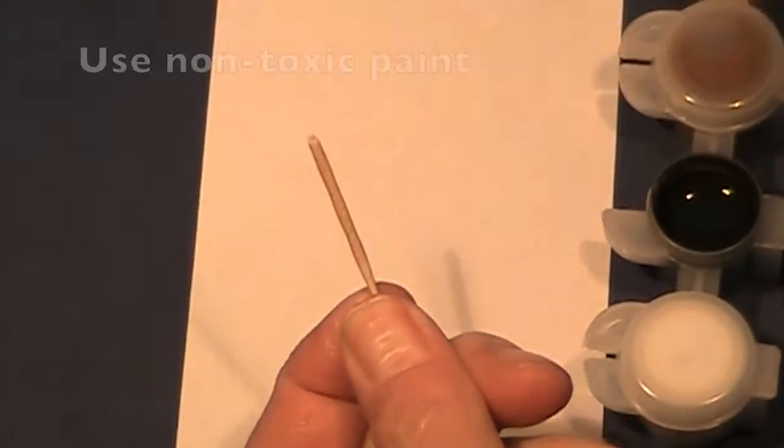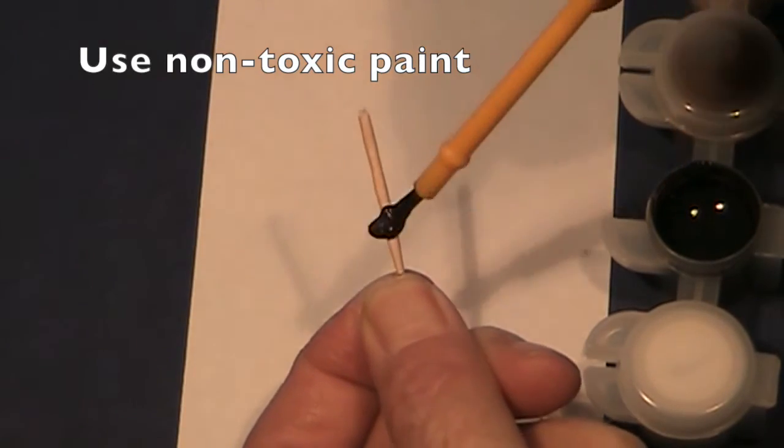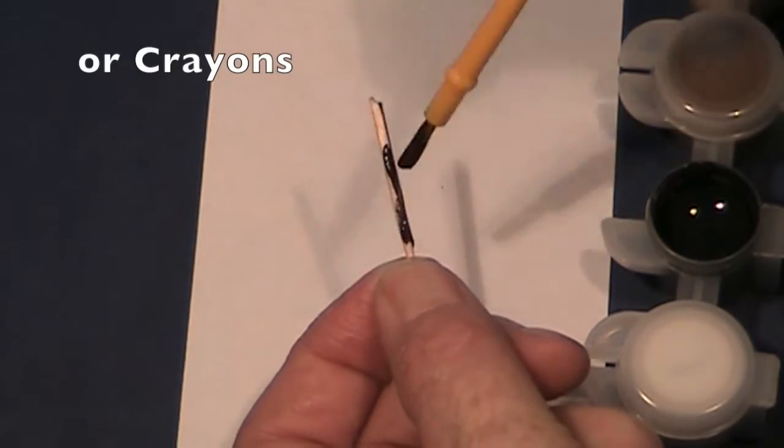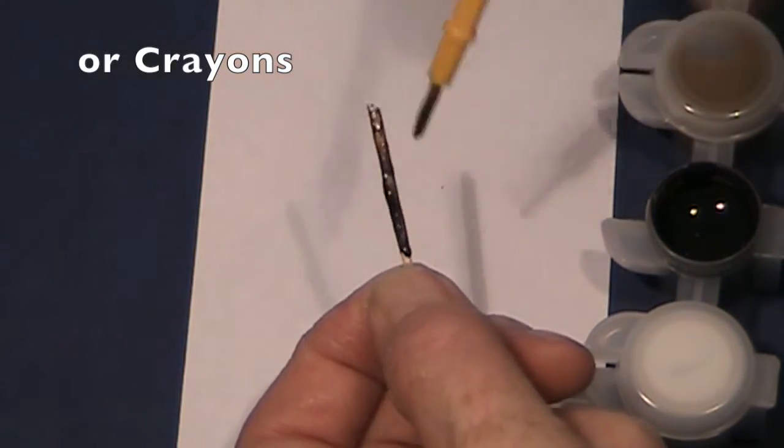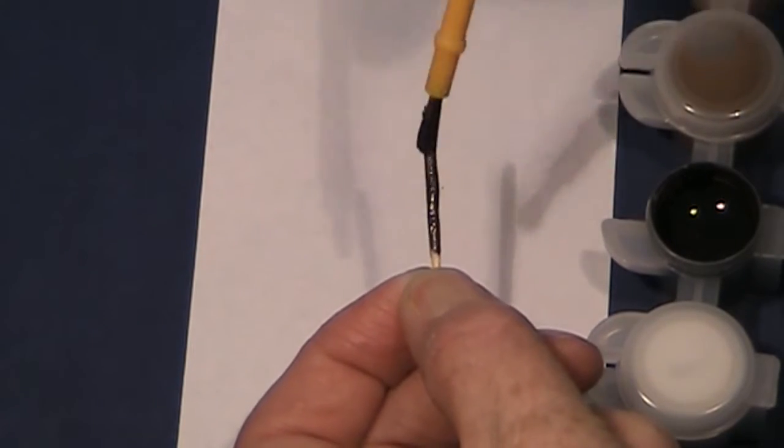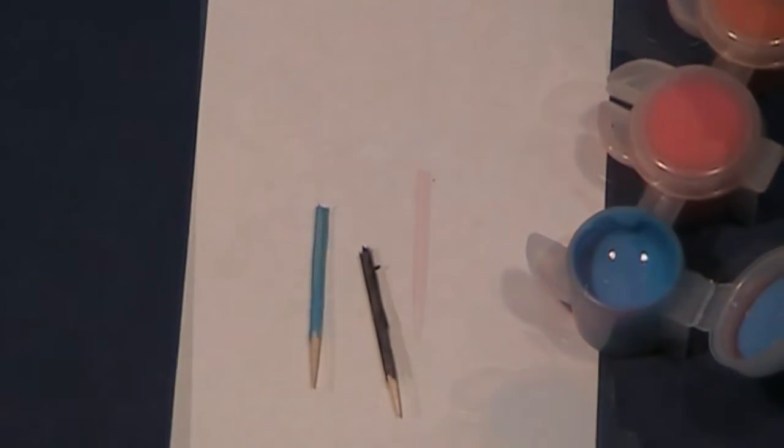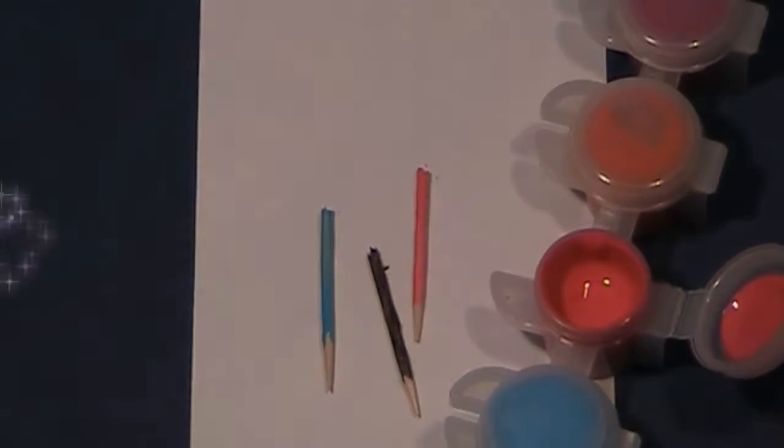Again, get a piece of paper so you don't mess up the table, and then I want you to get some non-toxic paint and paint these posts any color you want. Right here, I'm painting this black. Now, you can use paint or even crayons to do it. They don't have to just be black. They can be blue or pink or any color you'd like.